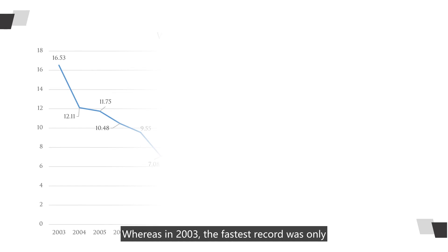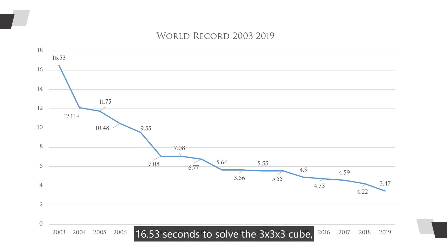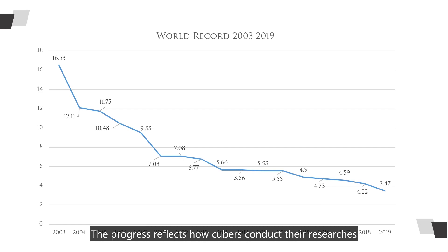Whereas in 2003, the fastest record was only 16.53 seconds to solve the 3x3x3 cube. As of today, it's now only 3.47 seconds — a progress that many cubers did not expect. This progress reflects how cubers conduct their research on the structure of a cube, and design and refine their own shortcuts to solve them.